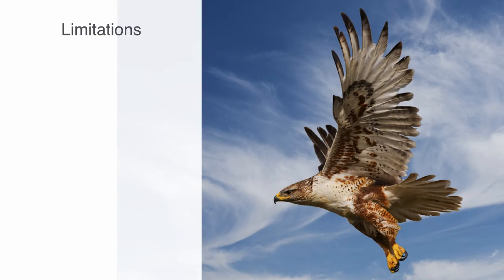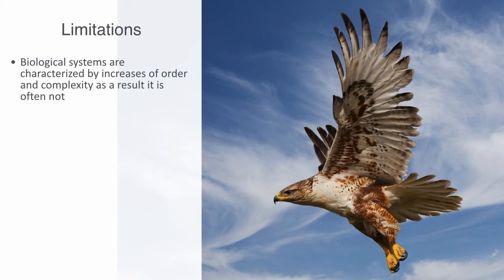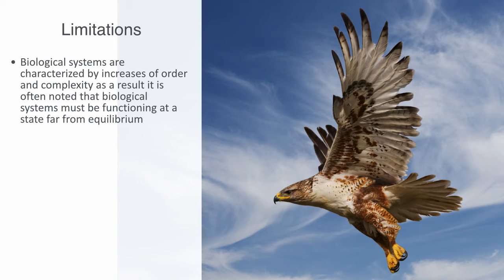The second law defines an increase in permutations and randomness over time. But biological systems are characterized by increases of order and complexity. As a result, it is often noted that biological systems must be functioning at a state far from equilibrium. This observation has led to the extension of standard thermodynamic theory through the development of what is called non-equilibrium thermodynamics.